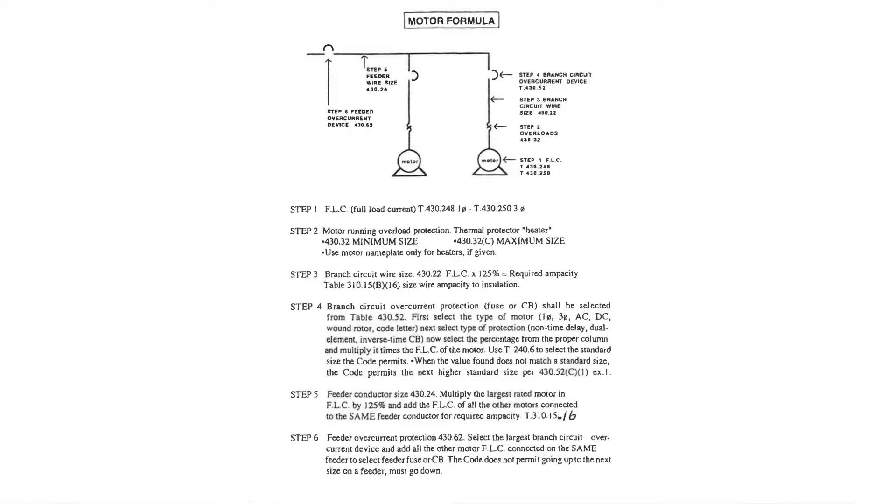Those are the three steps. Step number four takes us to putting a fuse or circuit breaker in front of this branch circuit. It says branch circuit overcurrent protection. Now take your pen and scratch through the word overcurrent protection because it's truly not being used as overcurrent protection. If you scratch through the words overcurrent protection, it will make it easier for you to understand.